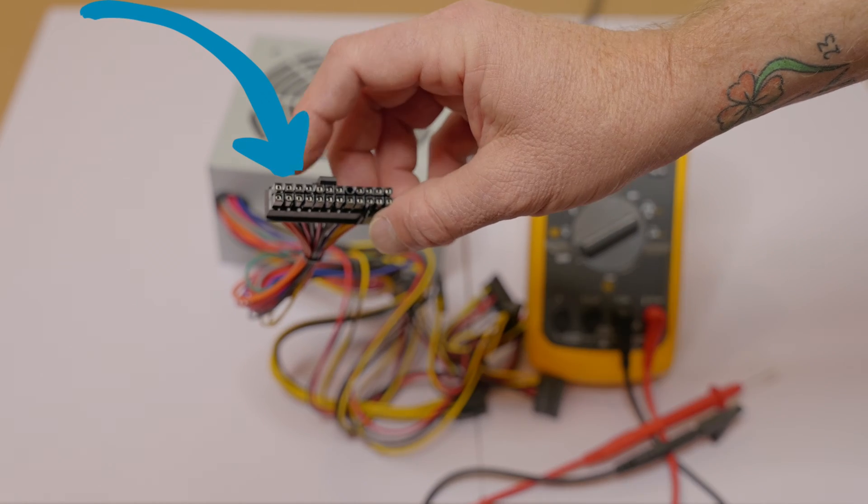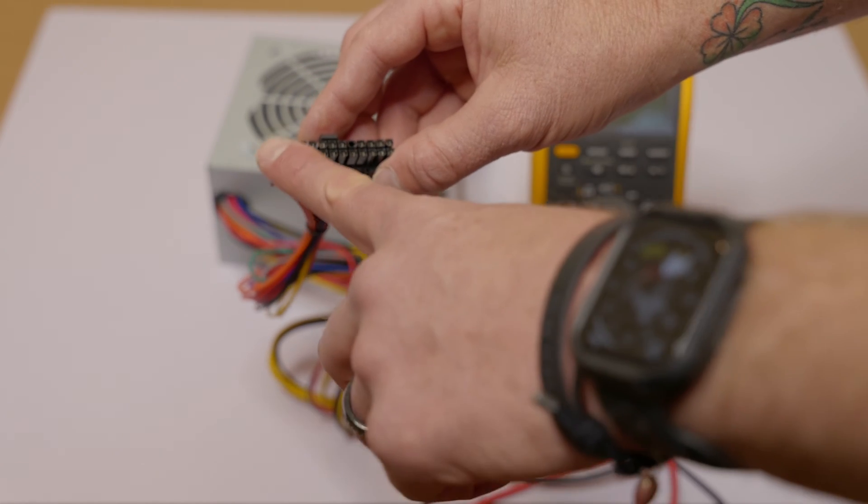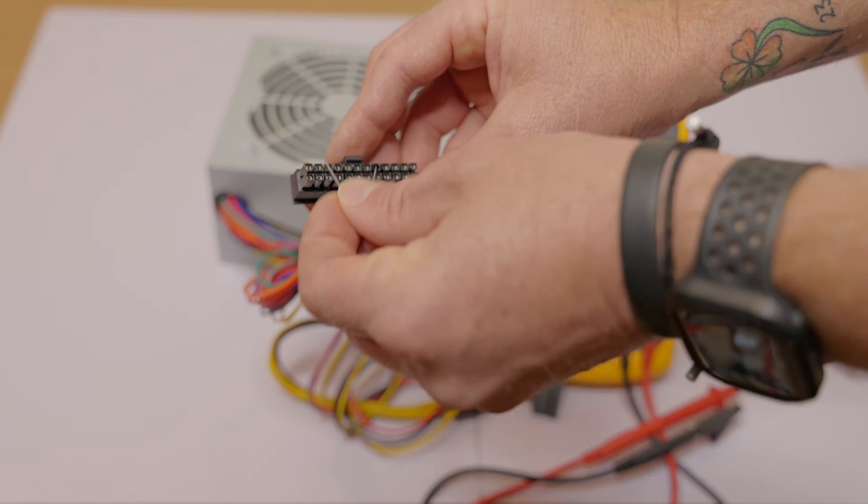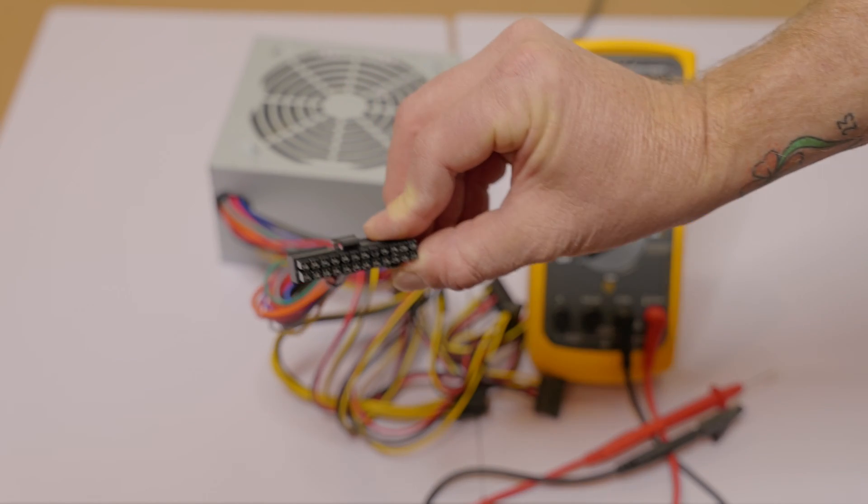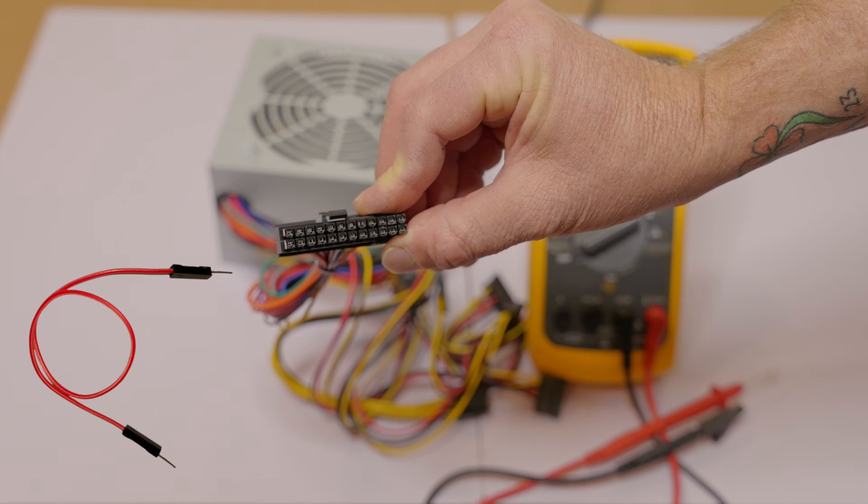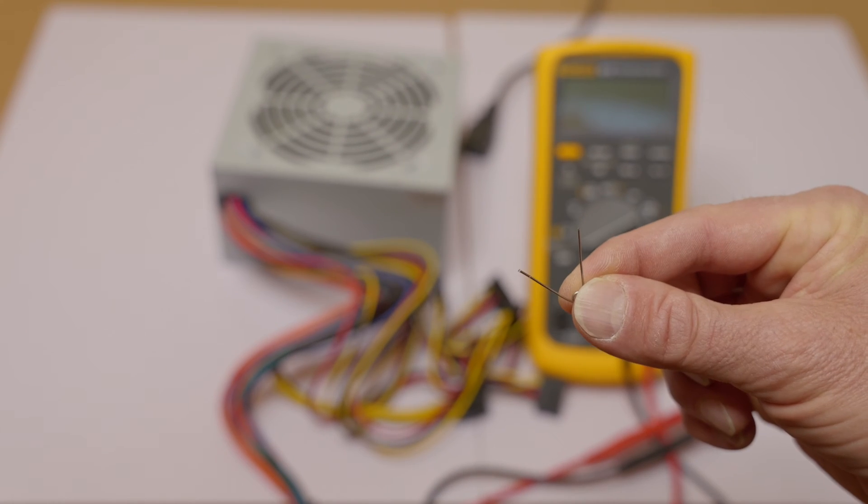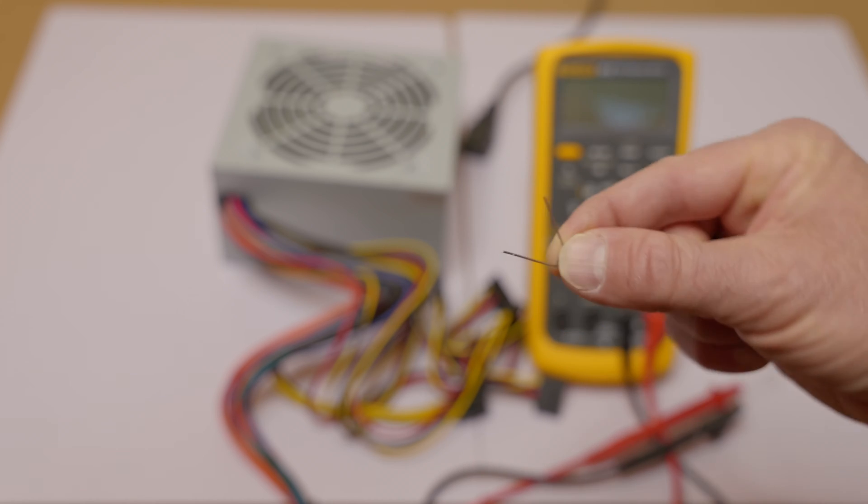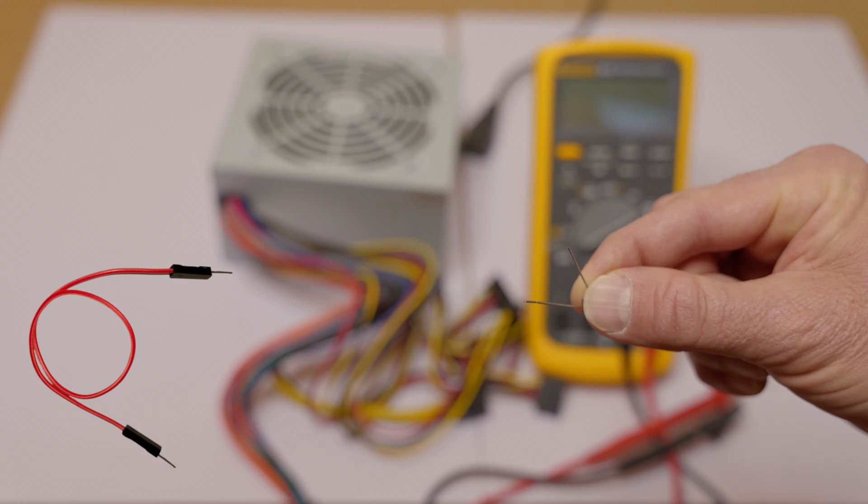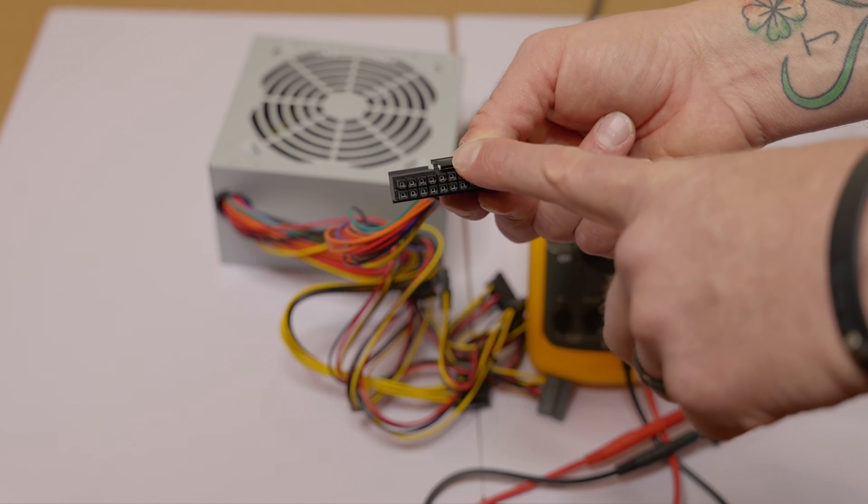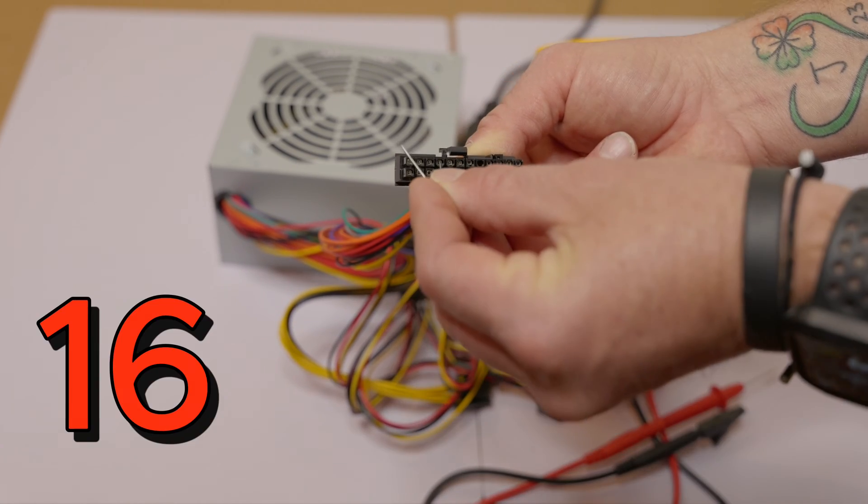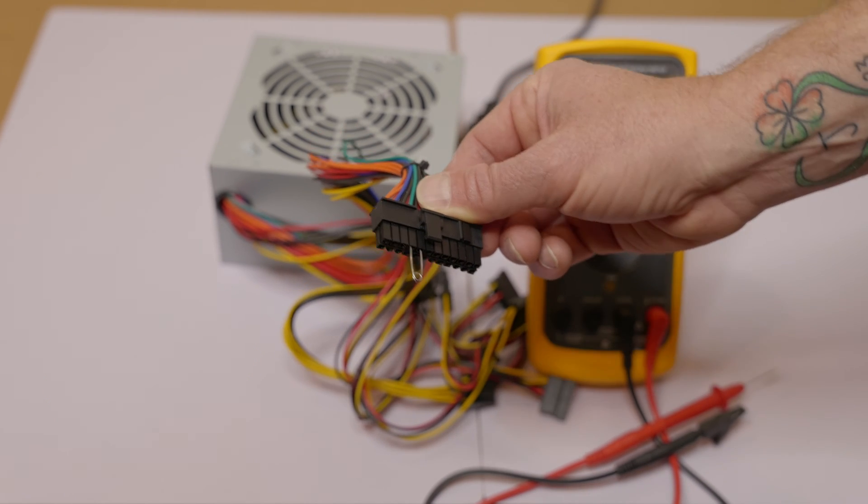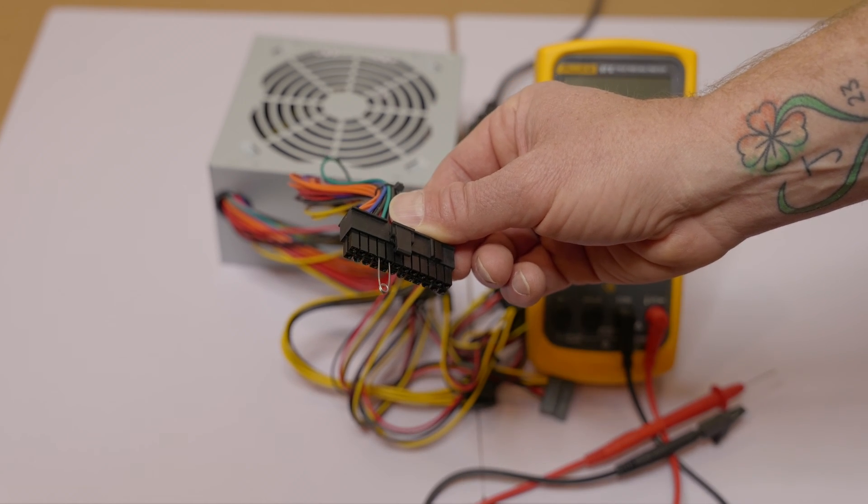So with the clip facing you, you're going to want to count 16 and 17 starting from the bottom left. So one, two, three, four, five, six, seven, eight, nine, ten, eleven, twelve, thirteen, fourteen, fifteen, sixteen and seventeen. Now those two pins, you have to jumper those out. So next, find a paper clip or safety pin with the ends cut off like I have here. You just want to have a metal jumper pin. So grab your 24-pin connector with the clip on top. We've counted out 16 and 17, so we've got 16 and 17 jumpered there. Now we're ready to begin the powered-on voltage test.